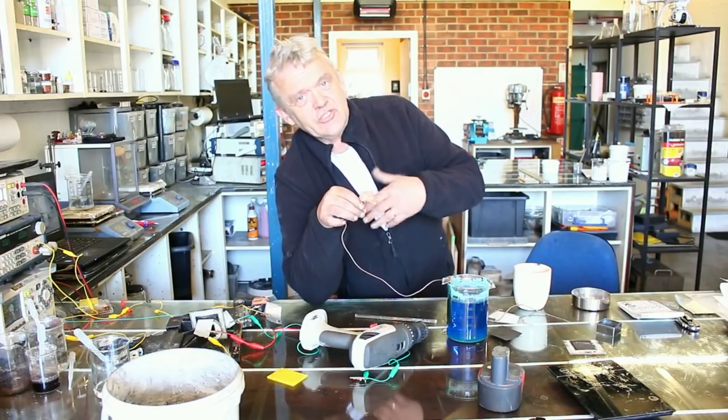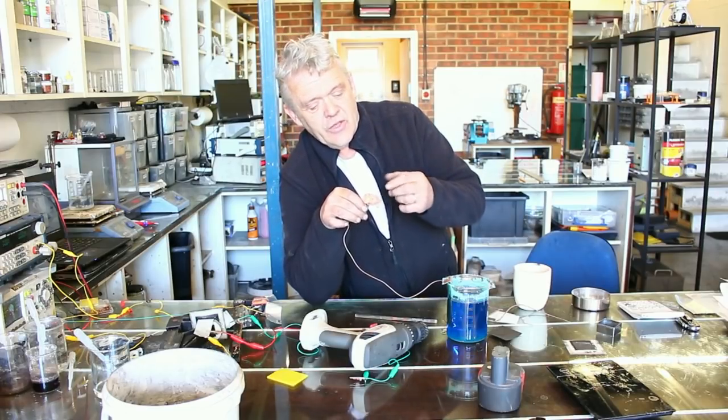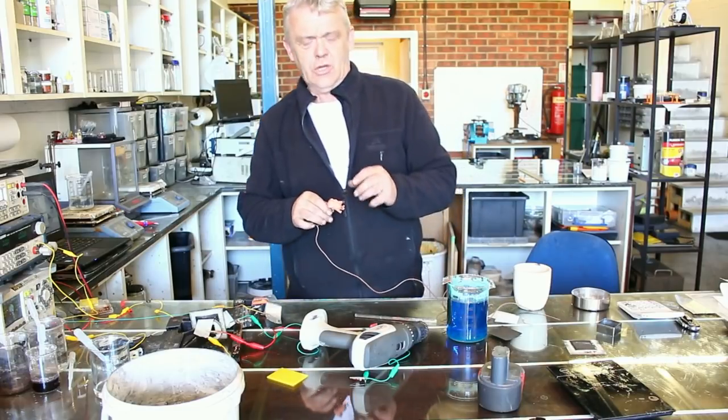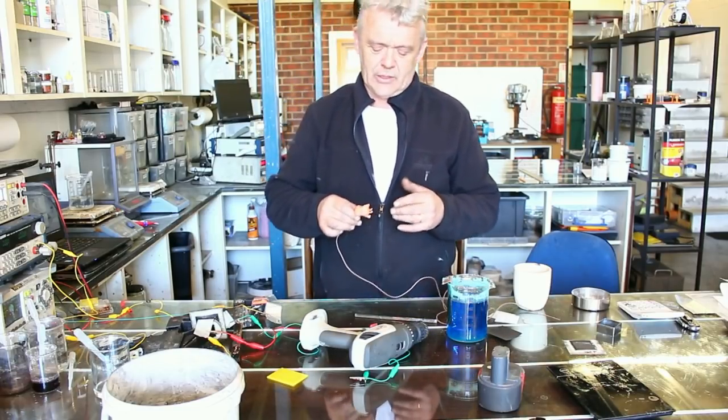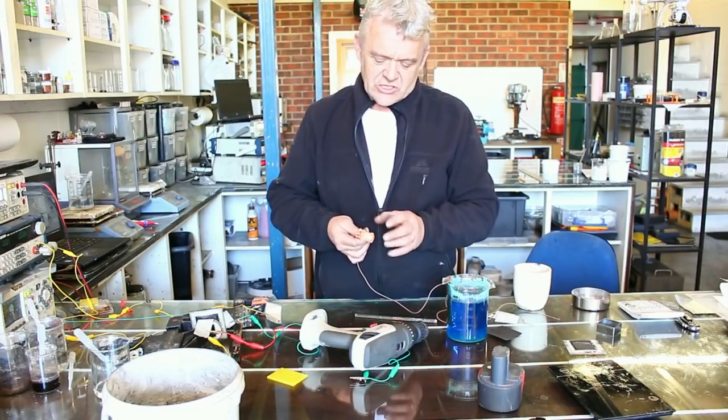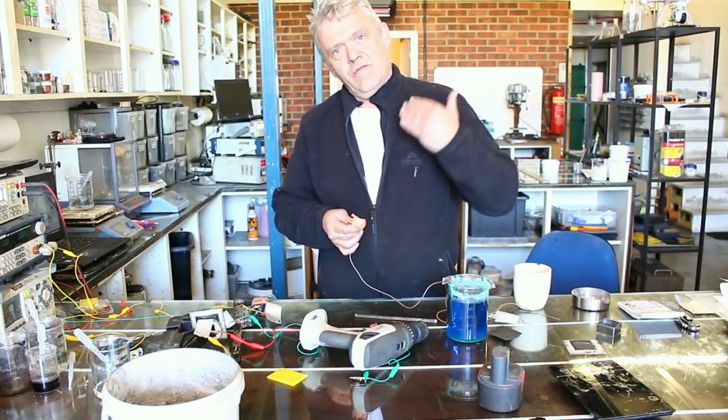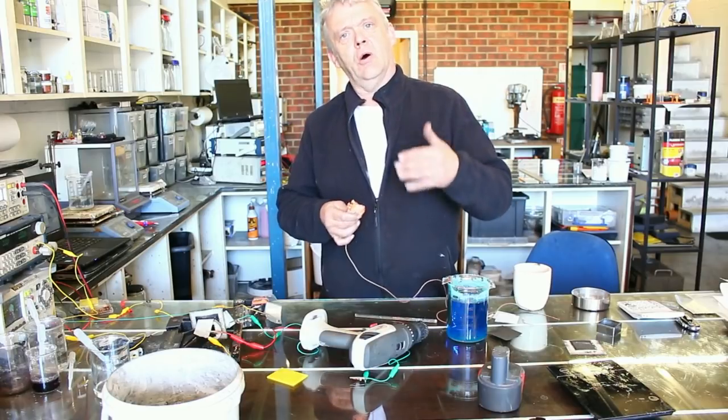If you do that too quickly, that is the current is too high, then what you'll get is kind of a red-brown deposition and it'll form dendrites and it'll be quite a mess. What you want is this nice salmon pink colour and you get that from a very low, slow process.